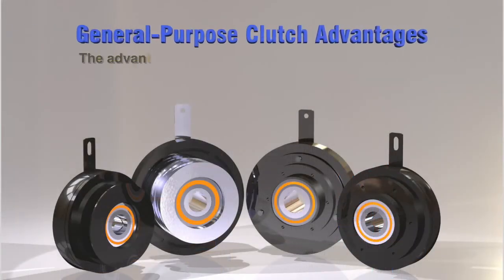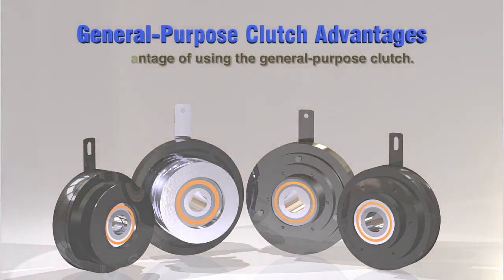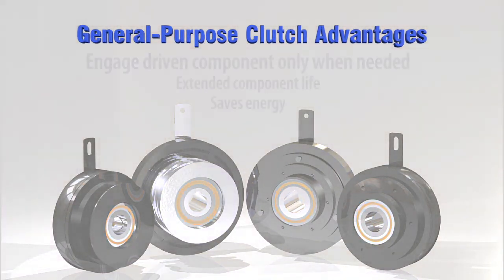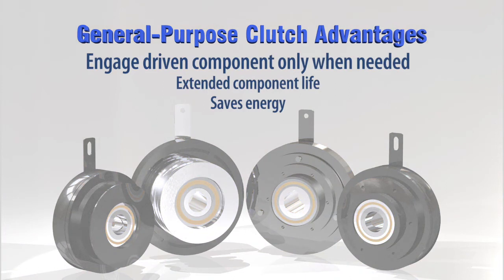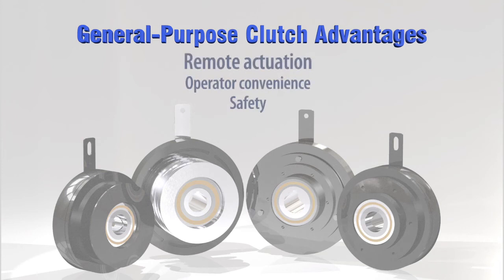General purpose clutches allow the operator to engage rotation as needed. This increases the life of the driven component. Also, since it is not running all the time, horsepower is not being wasted, which results in fuel savings. By using a general purpose clutch, an operator can engage and disengage a driven component remotely, which provides convenience for the operator and also keeps the operator a safe distance away from rotating equipment.